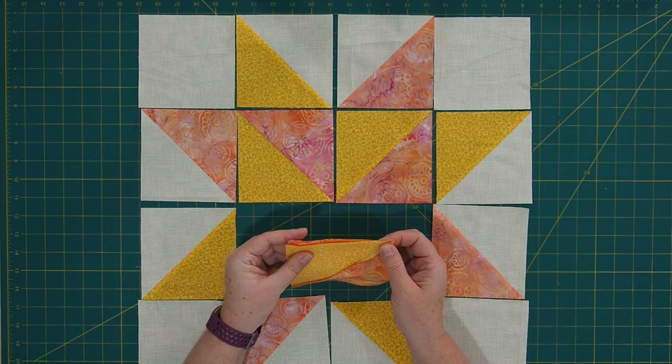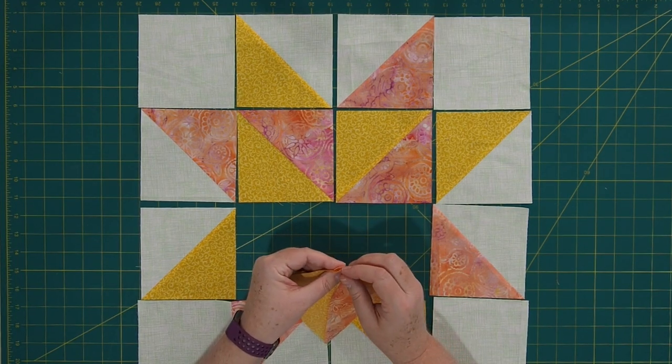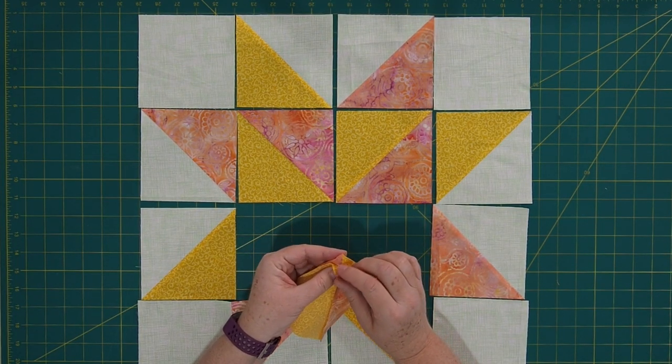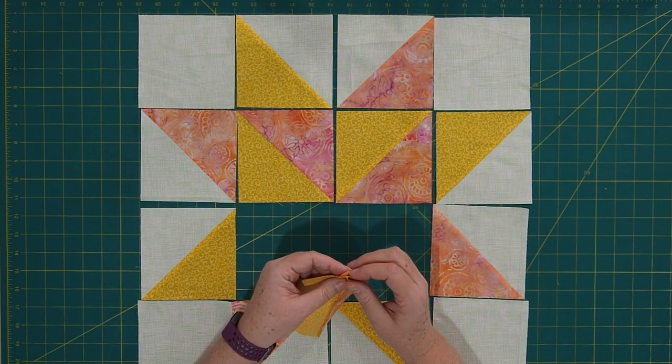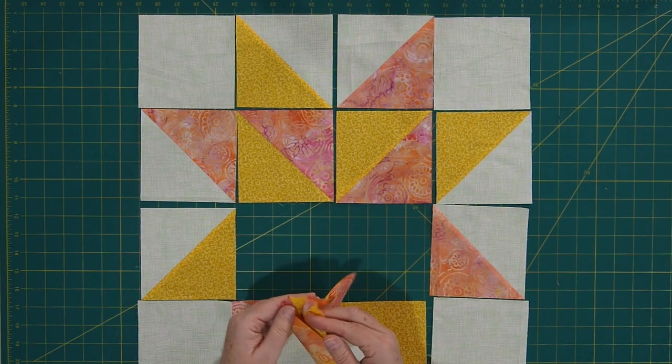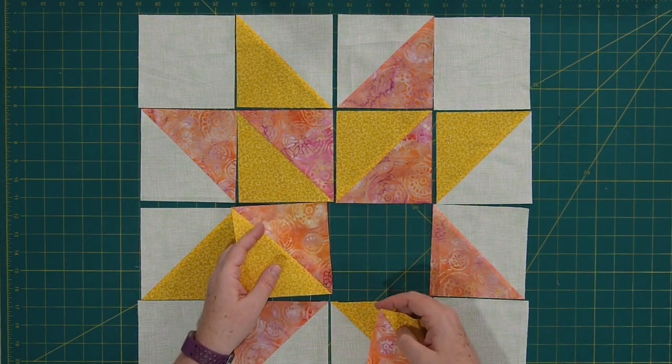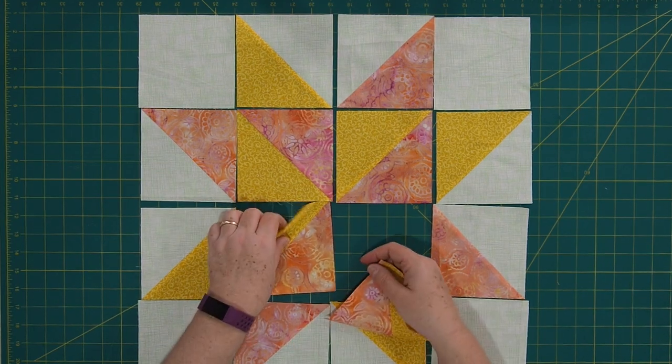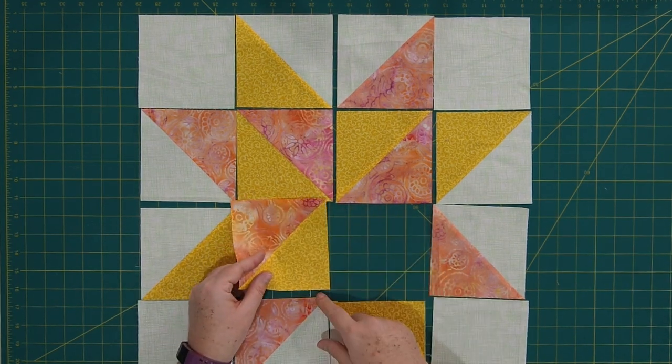The one thing I will suggest when you are sewing this block together, pin, pin, pin. You want to pin so that you get nice sharp points. So when you're sewing, just make sure you pin, especially at those corners like that, or those corners here where those seams join, you want those to be really nice and sharp. This is the tricky part about this block.